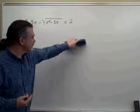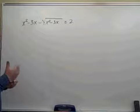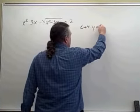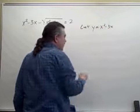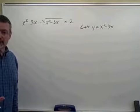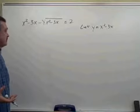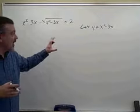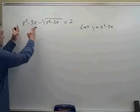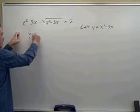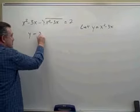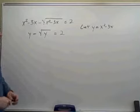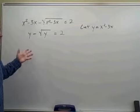So perhaps if I made a substitution, let's say making the substitution to let y equal x squared minus 3x, that could simplify the equation dramatically. So I'll let y equal x squared minus 3x. So this portion right here would just become y minus the square root of y equals 2.